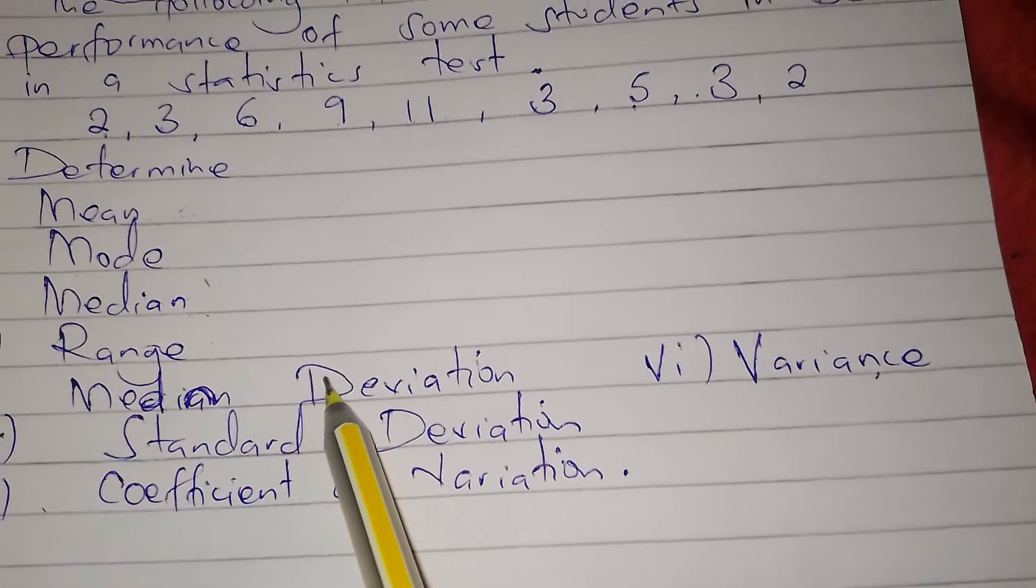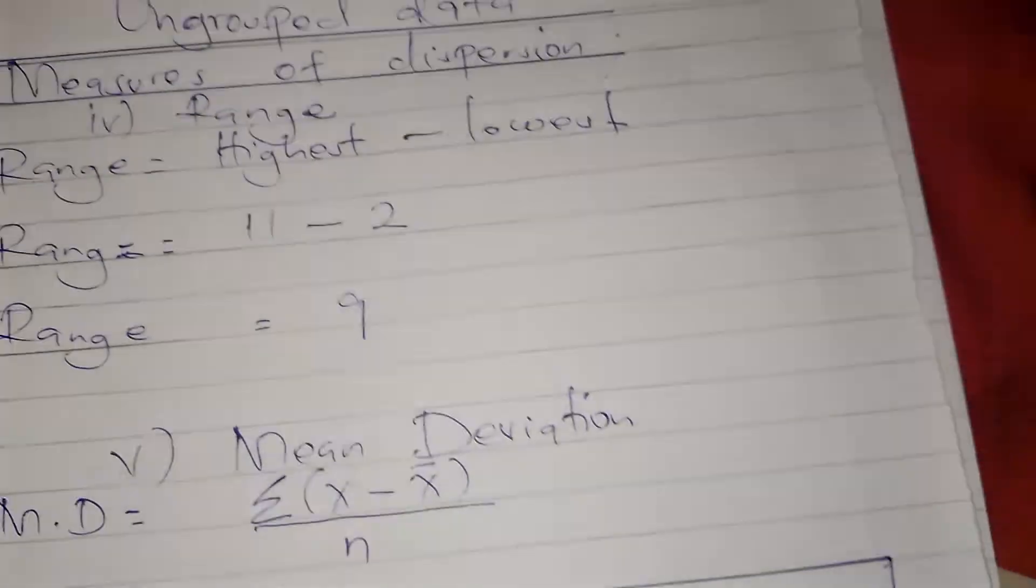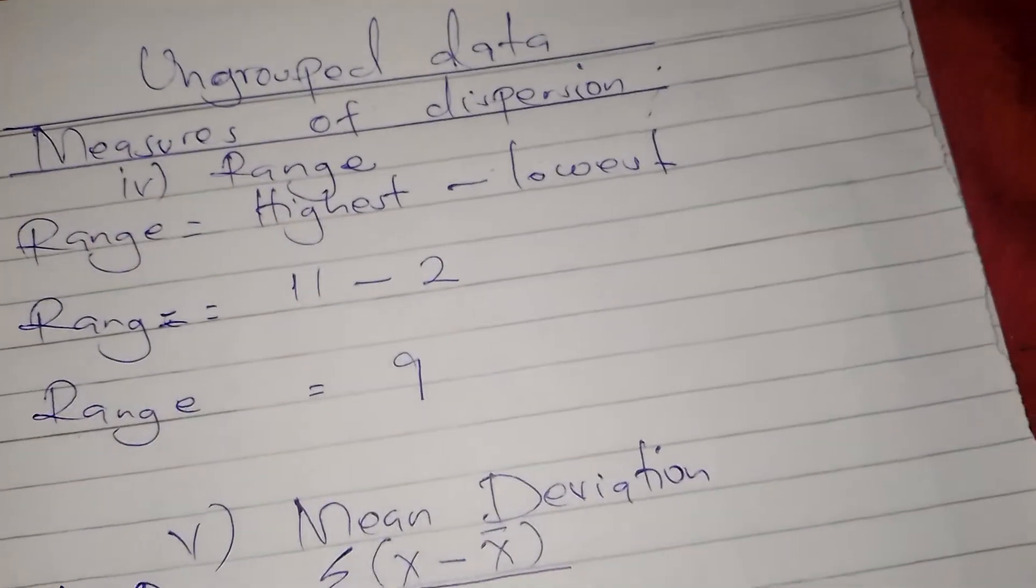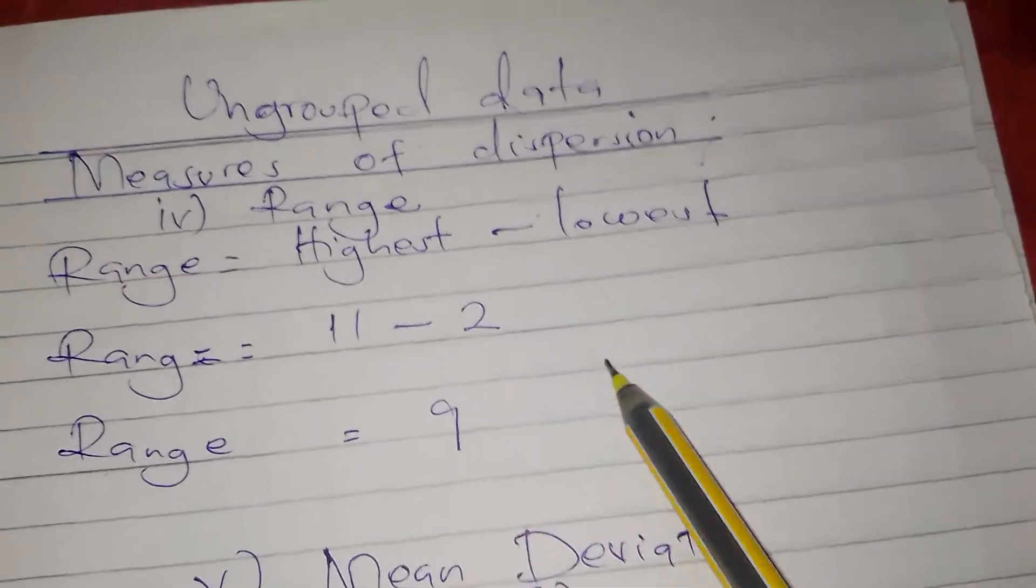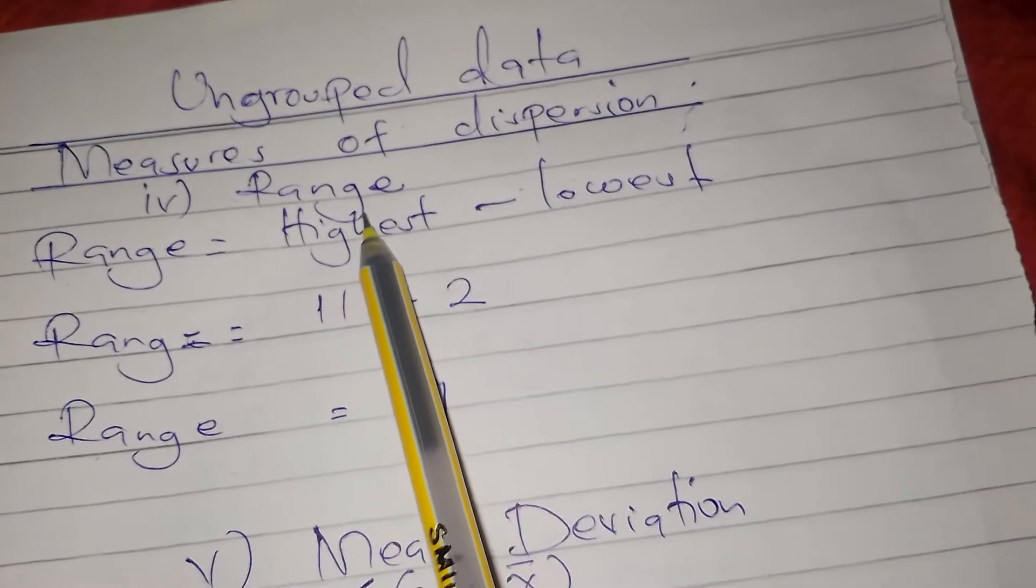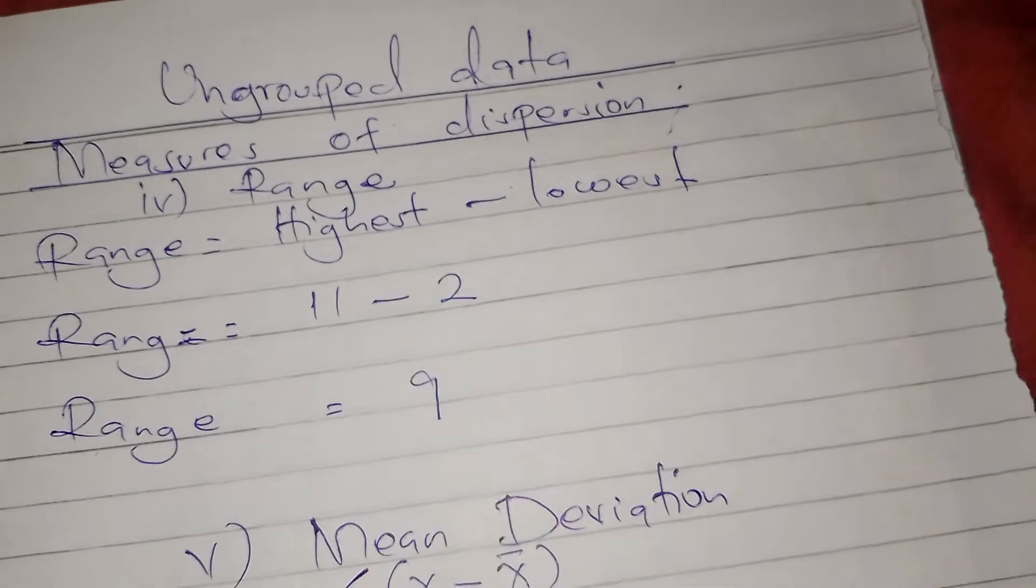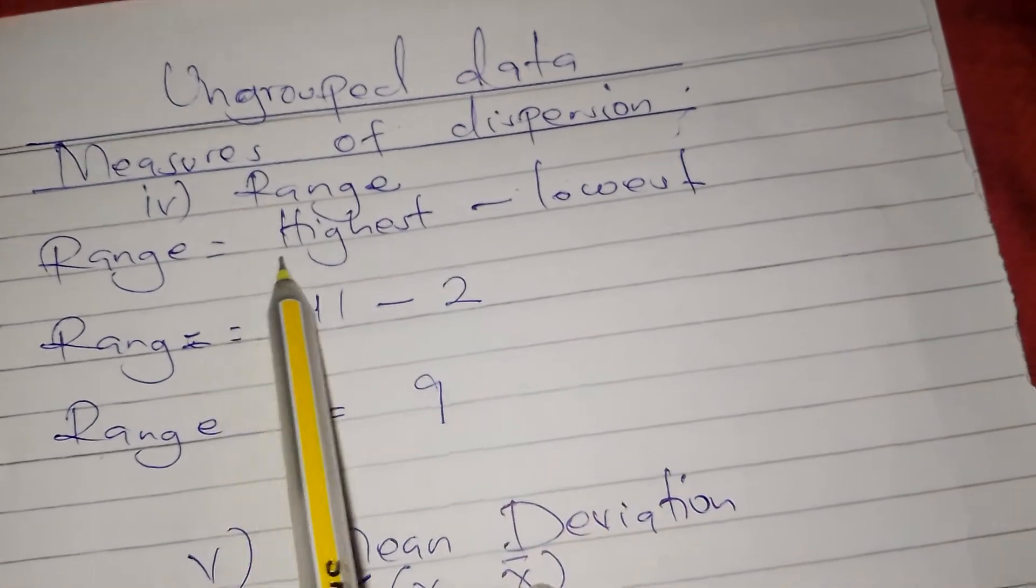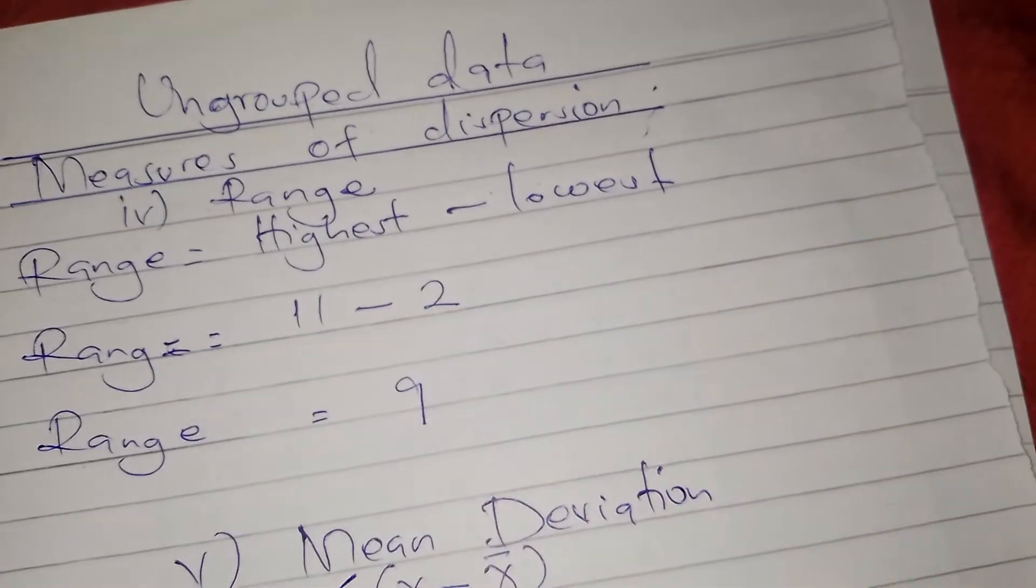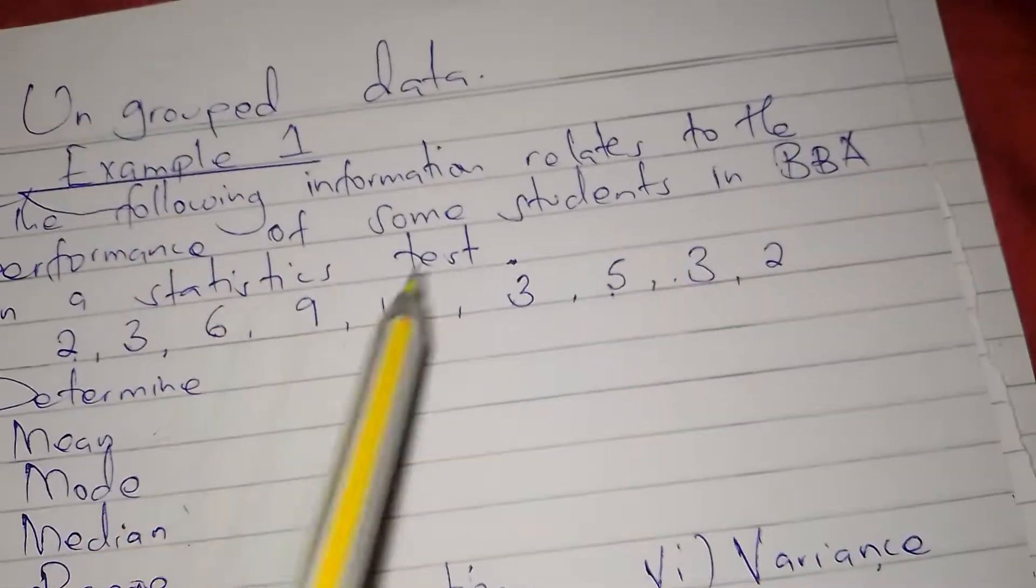We shall start with the range. Range refers to the difference between the highest and the lowest item. So the formula for range is highest minus lowest. According to our question, the highest figure was 11 and the lowest was 2.